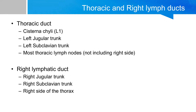Now let's talk about what drains into the thoracic duct and the right lymphatic duct. The thoracic duct has the cisterna chyli from the bottom half of the body, below the diaphragm, draining into it at above the region of the first lumbar vertebra. It also has the left jugular trunk from the head and neck region.